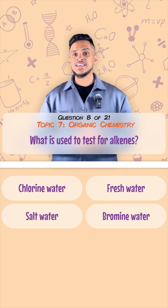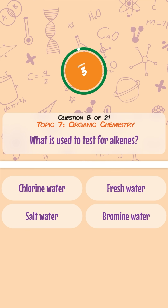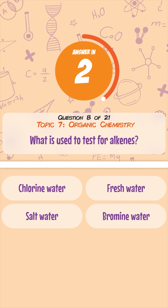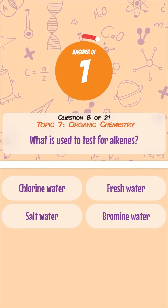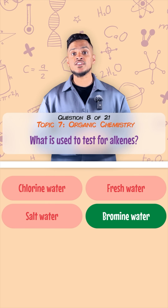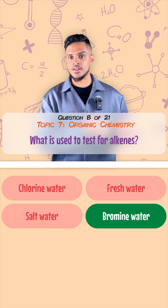What is used to test for alkenes? You add bromine water and it should change from orange to colourless.